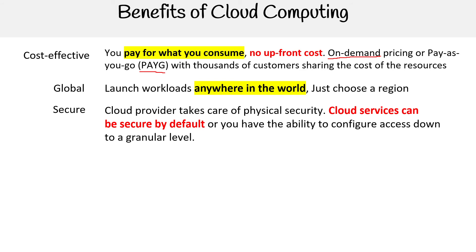Then there's security. The cloud provider takes care of physical security, and many of their services are designed to be secure by default. They enforce best practices and guide you toward better security for your benefit. You also have granular access control — something you might not have if self-hosting. For example, you can configure a user in your Google console to only be able to launch instances but not shut them down, or restrict them to a particular size. That level of granular control makes things much more secure.